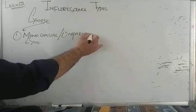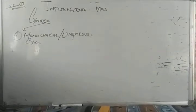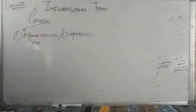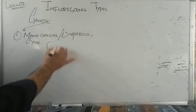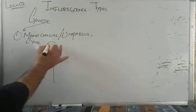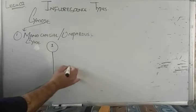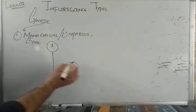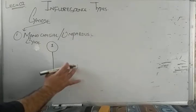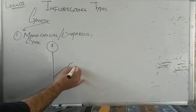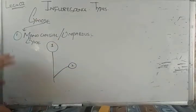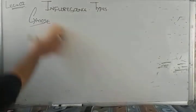This is very easy, and I am quite sure you will be able to answer any question related to this inflorescence. In monochasial cyme or uniparous cyme, the main axis terminates into a flower, and a lateral branch arises from the base which also terminates into a flower. This type of cymose inflorescence is called monochasial cyme.